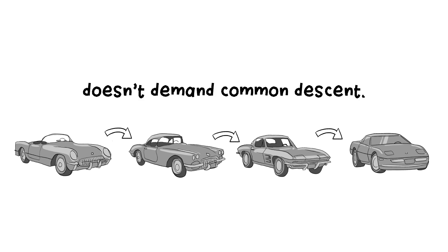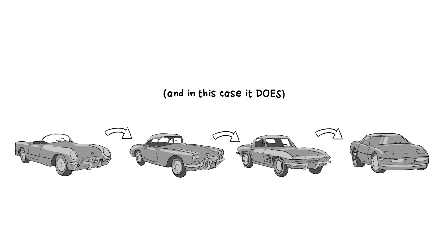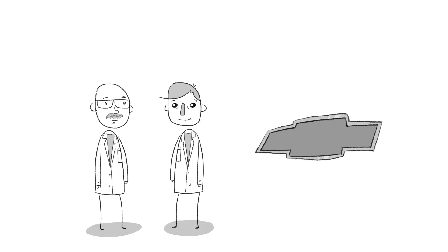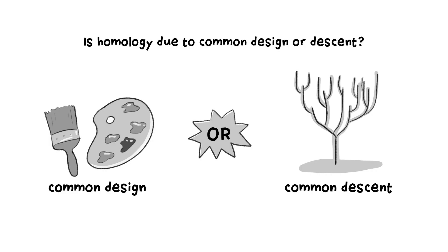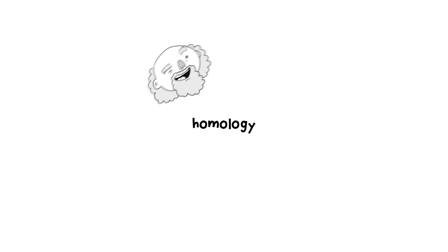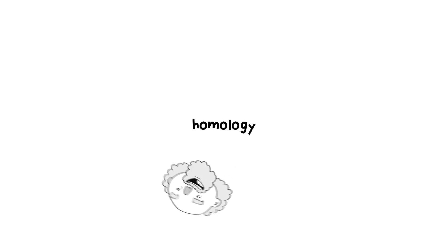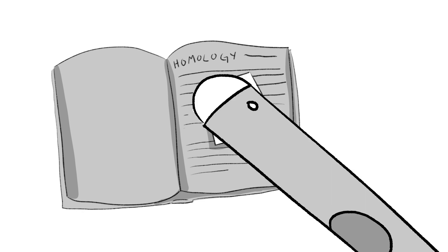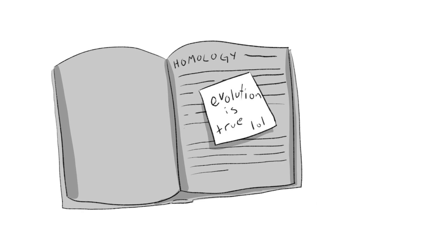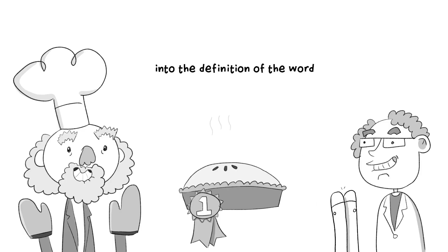A succession of even very similar forms doesn't demand common descent. It could — in this case it does — instead point to a common designer: the engineers at Chevy. Intelligent agents are free to reuse things however they want, just like using the same password for everything online. So the question remains open: is homology due to common design or common descent? Because the argument was so central to Darwin's case, his followers eliminated the question by simply redefining the word from simple similarity to meaning similarity due to common ancestry.